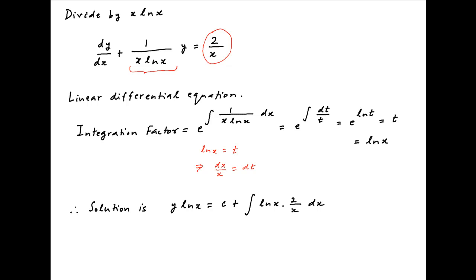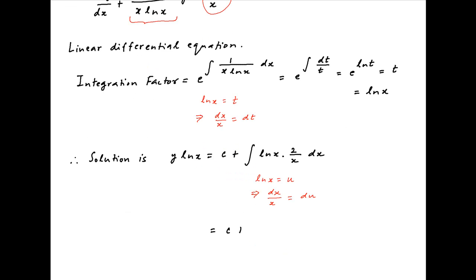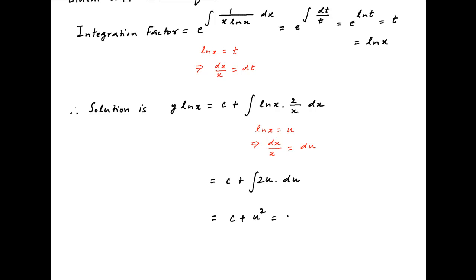To evaluate the integral on the right-hand side, put ln x equal to u. Taking the derivative of both sides, we get dx upon x equal to du. Therefore the right-hand side is given by c plus integral of 2u du, which equals c plus u squared. Replacing u with ln x, the right-hand side equals c plus (ln x) squared.